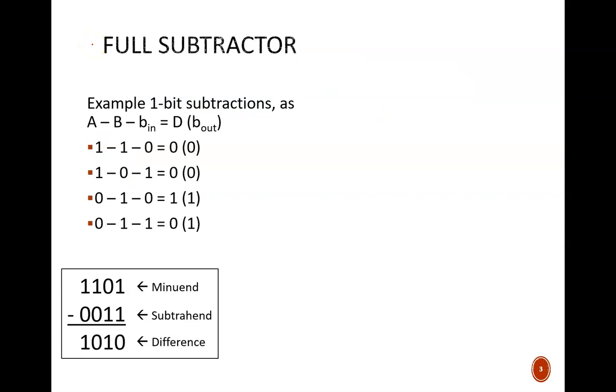An example of 4-bit subtraction is shown at the bottom. In each column, the top number, or minuend, is being subtracted by the bottom number, or subtrahend. And there is also the possibility of subtracting one due to a borrow. We see this case in the third column, where the starting one first has one subtracted from it due to the needed borrow from the previous column.